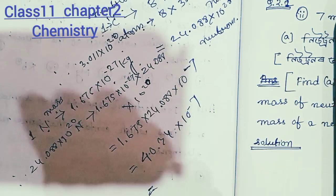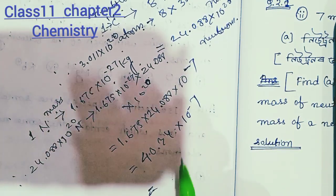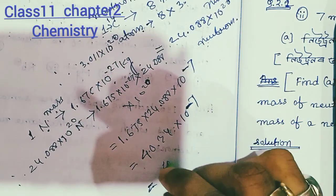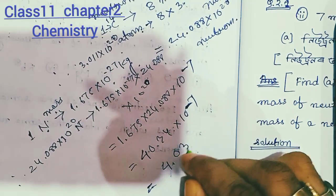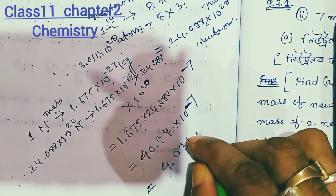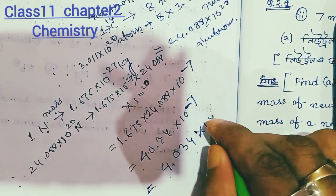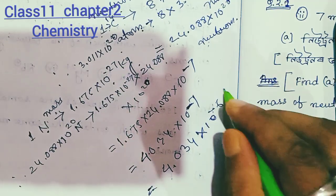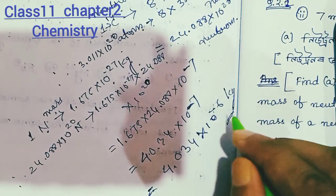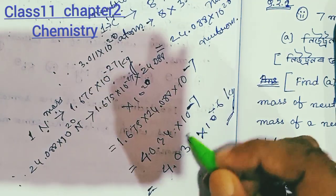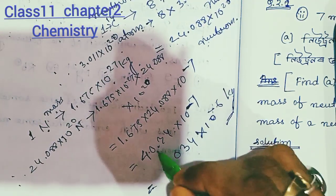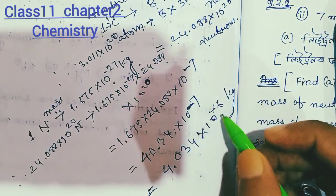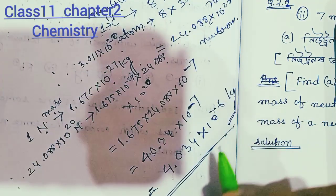This gives us 4.034 × 10⁻⁷, which comes out to 4.034 × 10⁻⁶. Adjusting the power — from minus 7 to minus 6 — after canceling one power of 10, the final answer is 4.034 × 10⁻⁶.